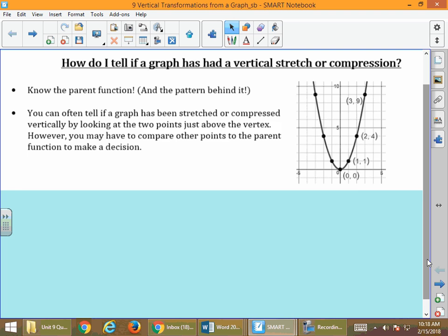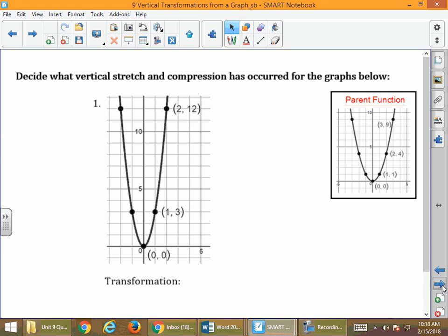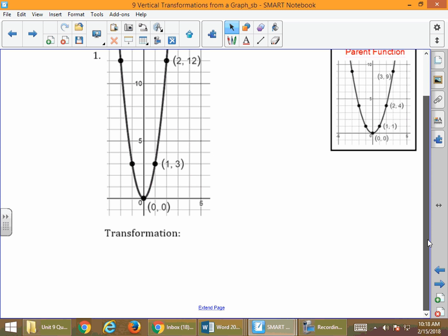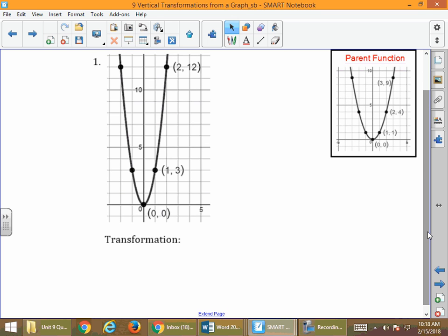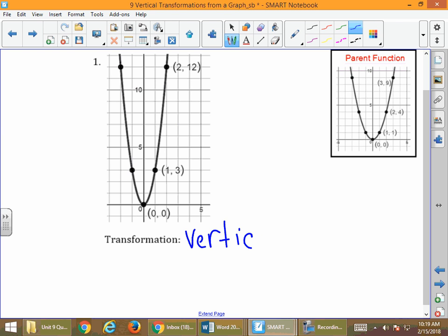I have the parent function off to the side. If we take a look here, we've got our vertex at 0, 0. But when we look at the graph, did we go one space to the right and one up? No. This time what we did is we went one space to the right and three up.